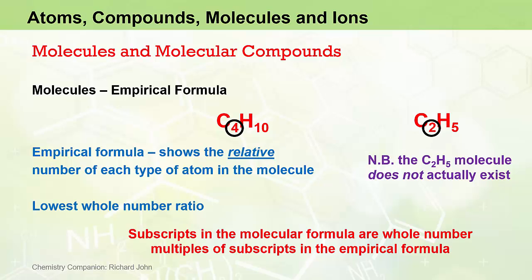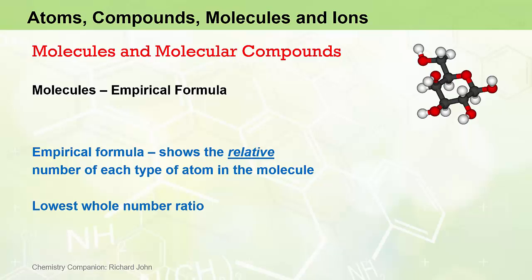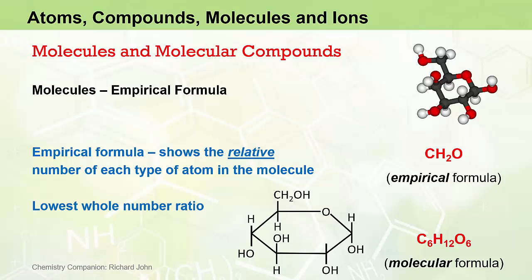It follows that the subscripts in the actual molecular formula are always whole number multiples of the subscripts in the empirical formula. For carbon, we have 2 as a subscript in the empirical formula; multiply that by 2 and we get 4 in the molecular formula. For hydrogen, we have 5 as a subscript in the empirical formula; multiply that by 2 and we get 10 in the molecular formula. We can use glucose as another example: it has the empirical formula CH2O. Multiplying the subscripts by 6 gives the molecular formula C6H12O6.